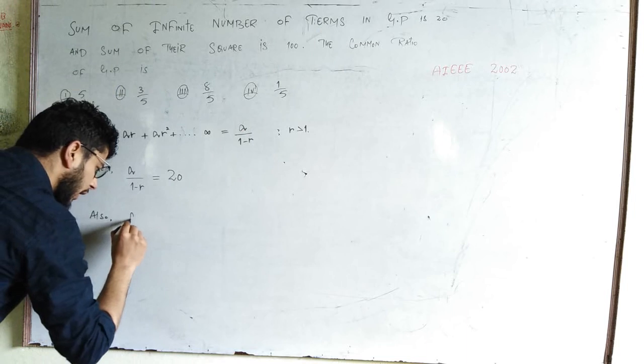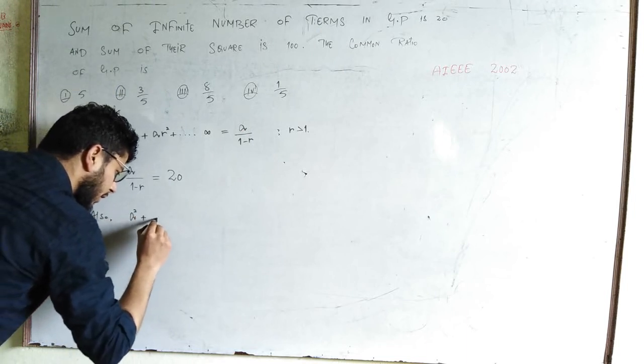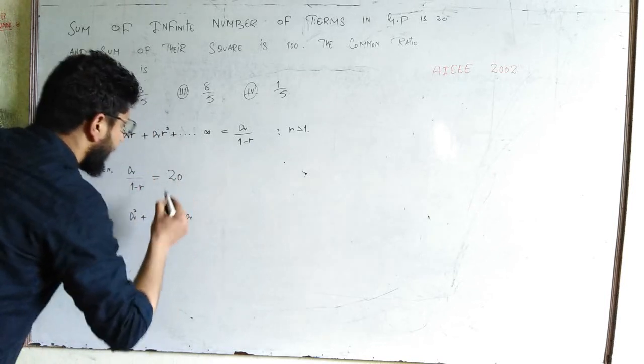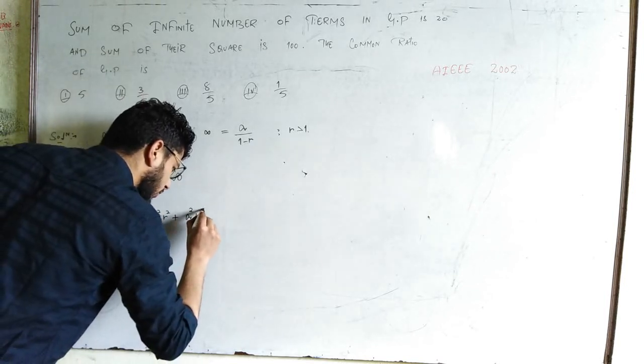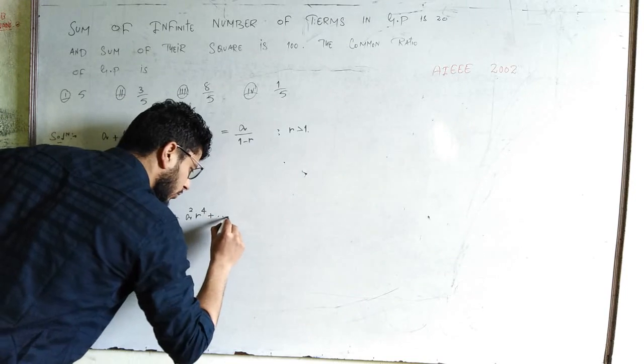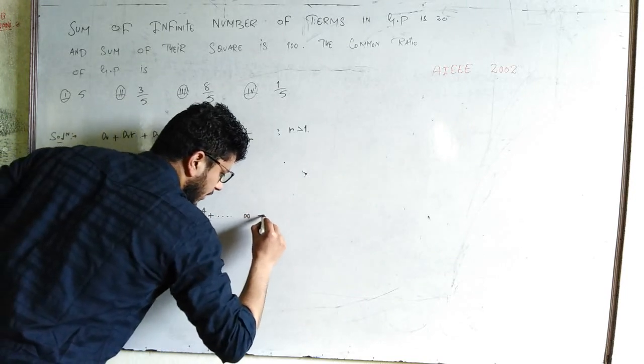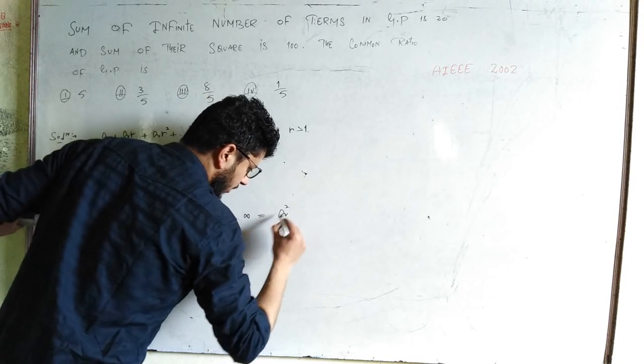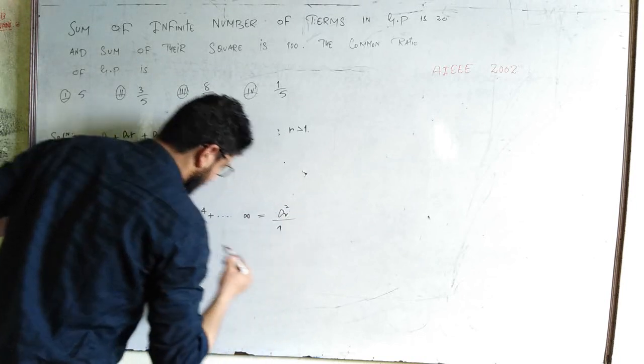a² plus a²r² plus a²r⁴ plus so on up to infinity equals a²/(1-r²).